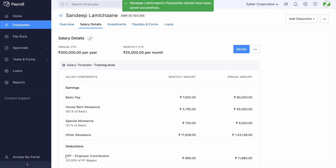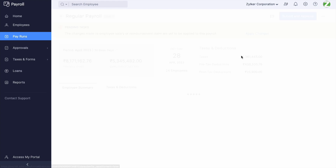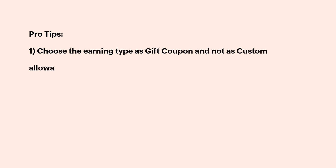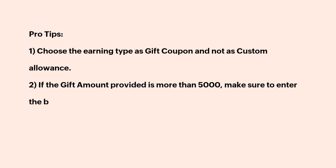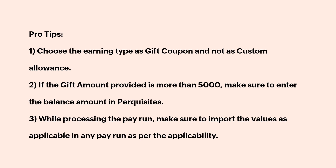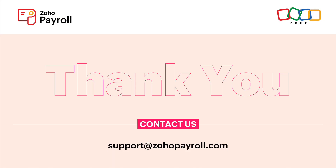When the pay run is created, the amount of ₹5,000 is added to the earnings. Alternatively, you can import the same using the one-time earnings and deductions file. Pro tips: choose the earning type as Gift Coupon and not as Custom Allowance. If the gift coupon provided is more than ₹5,000, make sure to enter the balance amount in Perquisites. While processing the payroll, make sure to import the values as applicable in each payroll period as per the applicability.